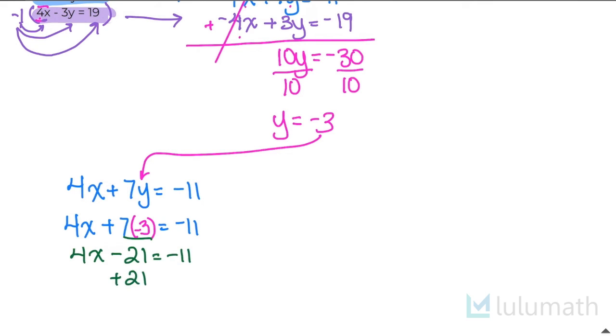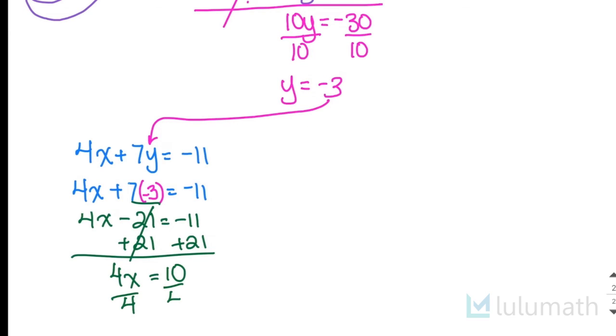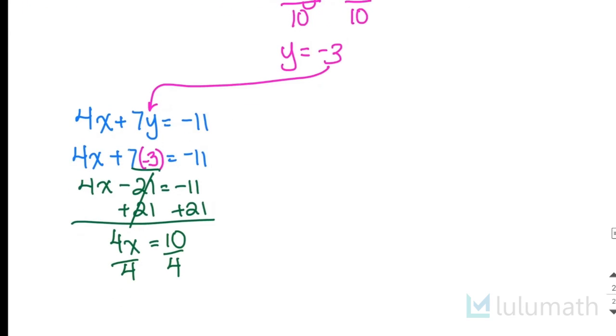I can add 21 to both sides to get rid of the constant here. So I end up getting 4x equals, now just divide by 4. And here I end up getting x equals 10 over 4, which reduces to, they're both divisible by 2. So I end up getting 5 over 2, or I could say x equals 2.5. So that means that my solution is going to be 2.5 negative 3.